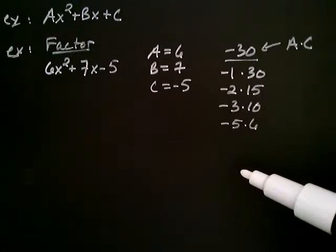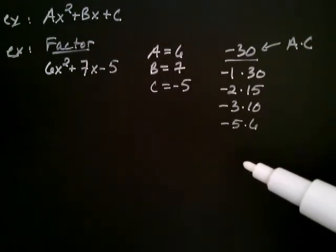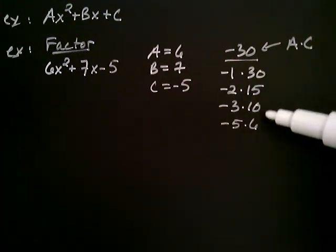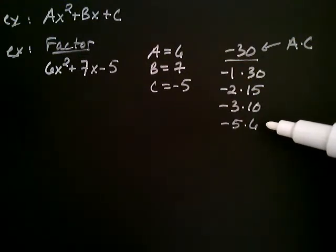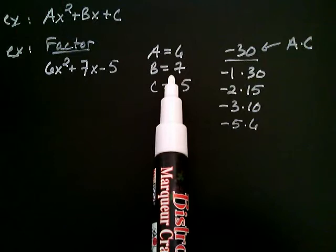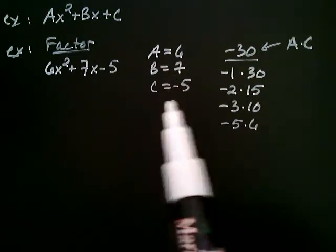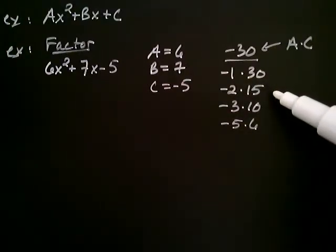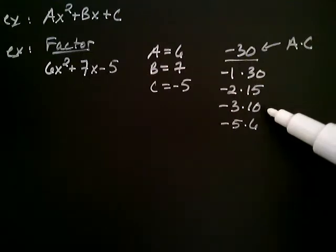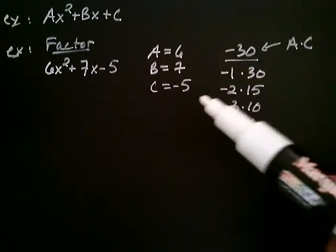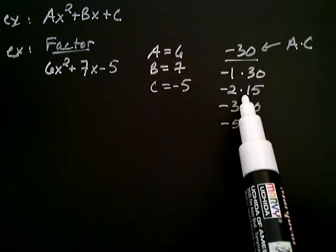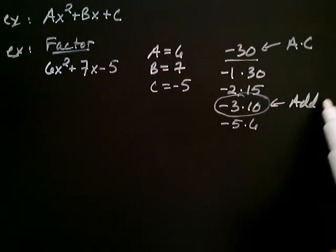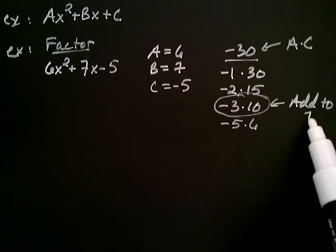The next factorization could be negative 6 times 5 and negative 10 times 3. Now, it turns out that I already have what I need for the following reason. The next step in the AC method is to ask yourself, do any of these factorizations, do any pair of numbers add to be the B? Well, the B here is 7. So when I look at these factorizations, well, these two numbers add to be 29. These two add to be 13. And negative 3 plus 10, they indeed add to be positive 7. And once you identify that, you circle that pair of numbers. And you make a note that in this case, they add to our B, which in this case is positive 7.